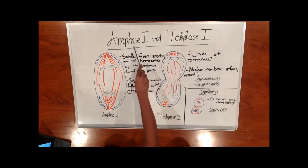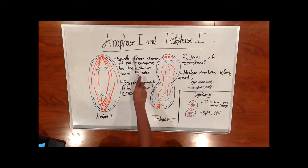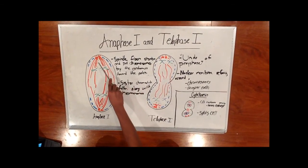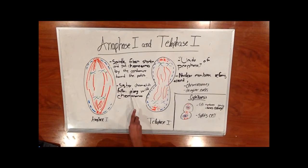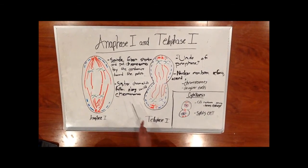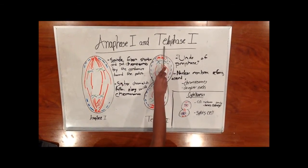Next is anaphase 1. When the microtubules are shortened and pull the chromosomes minus centromeres to opposite poles, as depicted in this photo, the sister chromatids follow along with them. Then telophase, or telophase 1, occurs.